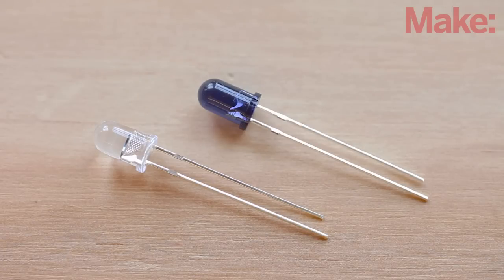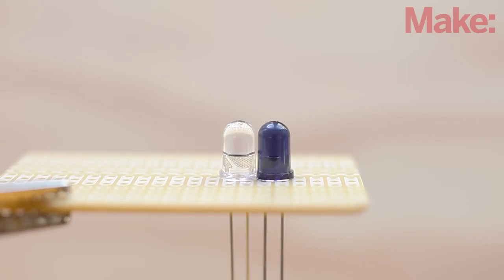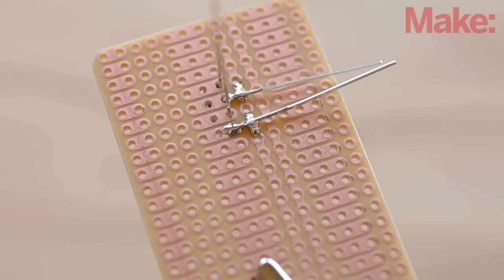Now we need to mount the emitter and detector. The emitter has a purple hue, while the detector is clear. Align them flat to flat and pass their leads through the PCB, placing the emitter closest to the end of the board. Bend both ground leads over and solder them to the nearest rail.